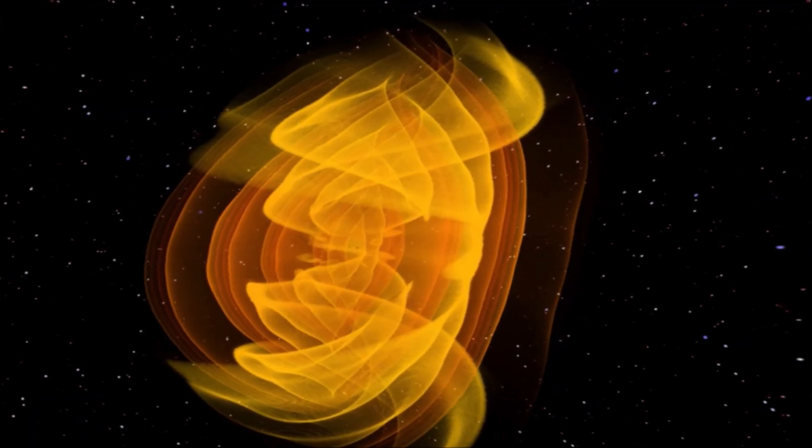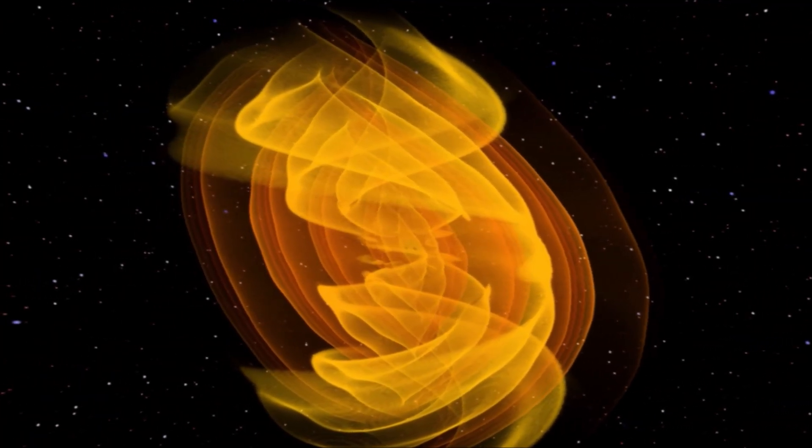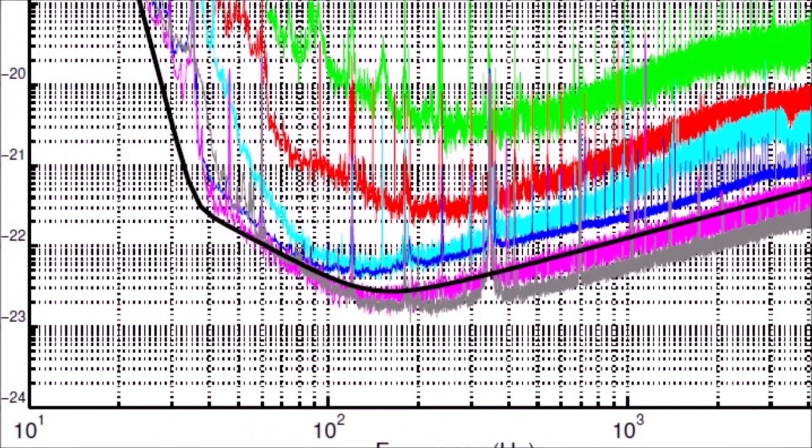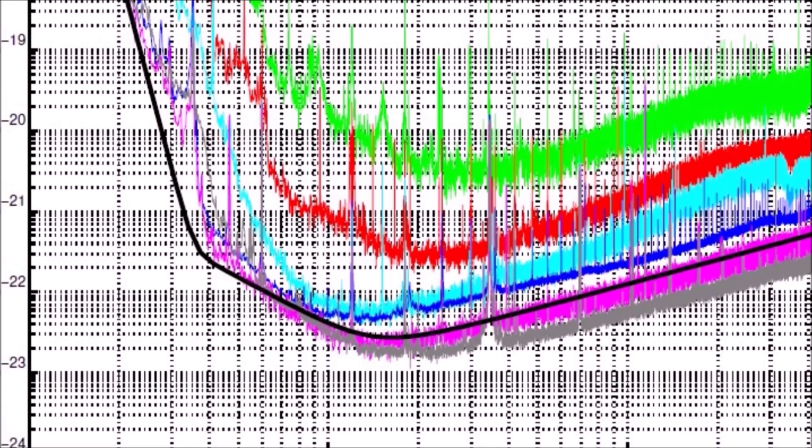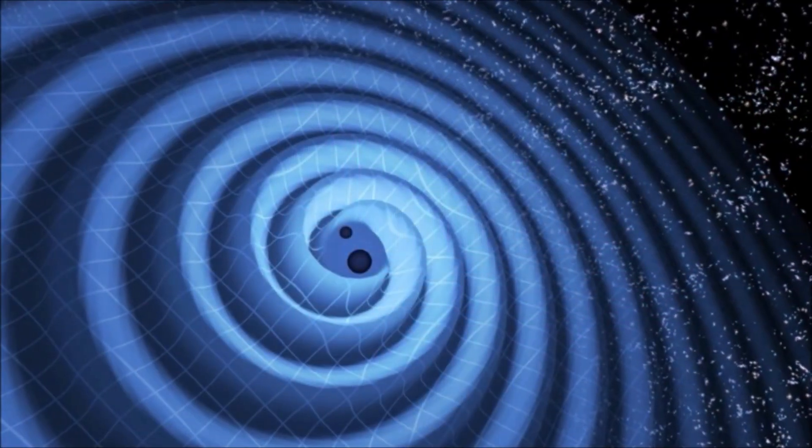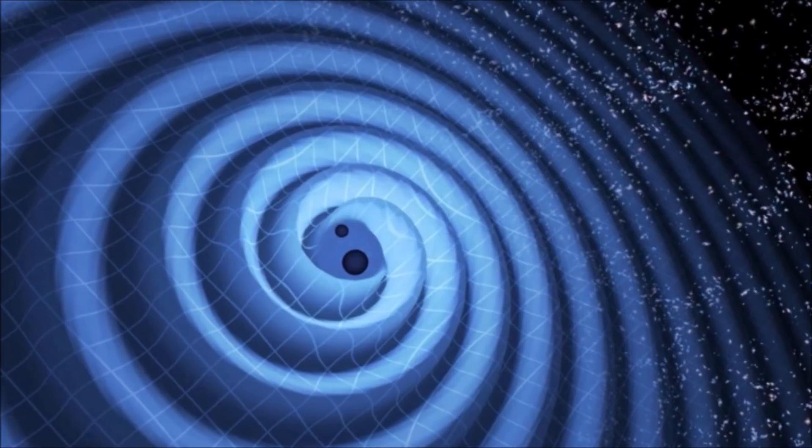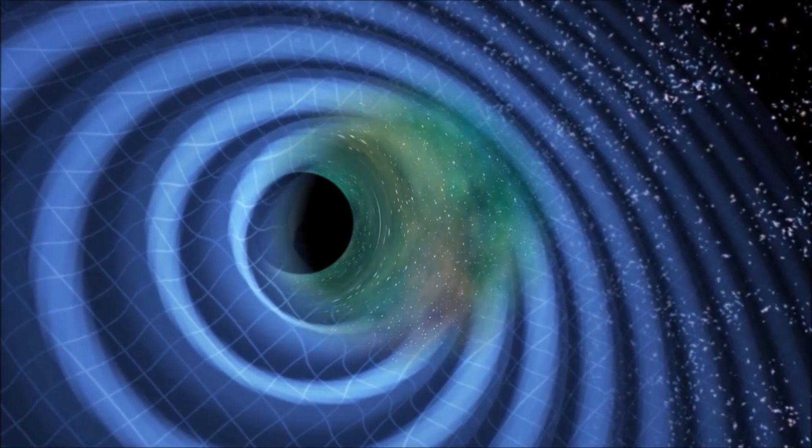But gravitational wave detectors might be able to provide experimental evidence. When researchers set out to calculate how potential extra dimensions would affect observable gravitational waves, they found two peculiar effects: extra waves in high frequencies, and a modification of how gravitational waves stretch space.